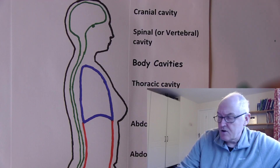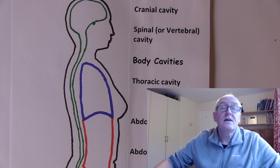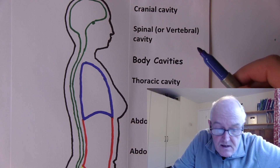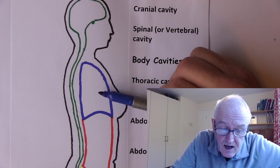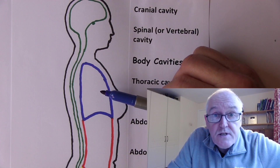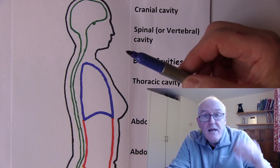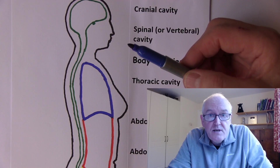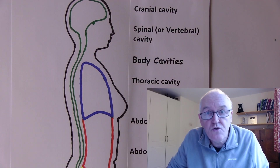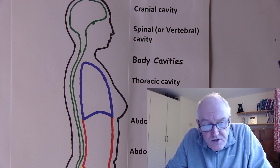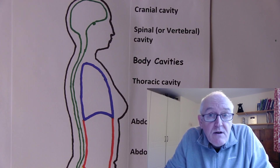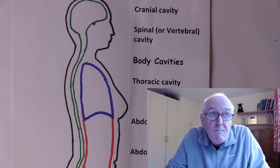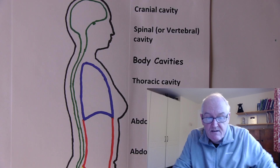Going down, we have the thoracic cavity, drawn here in blue. The thoracic cavity contains the lungs, the heart, and the major blood vessels associated with the heart — the aorta, the pulmonary arteries, the inferior and superior vena cava, and the pulmonary veins returning blood to the left side of the heart.